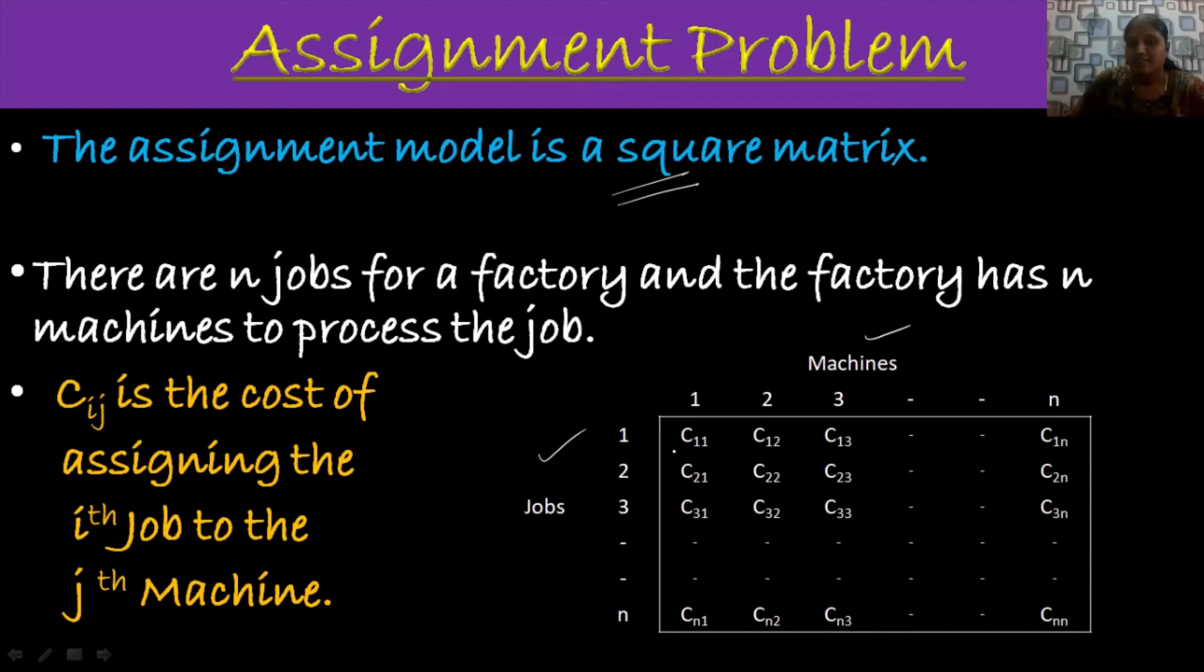Here, C11 represents assigning job 1 to machine 1. That is, the cost of assigning job 1 to machine 1 is C11. Next, C12 is the cost of assigning job 1 to machine 2 and C13 is the cost of assigning job 1 to machine 3 like that. So the cost associated with each job to machine is given as a cost matrix.